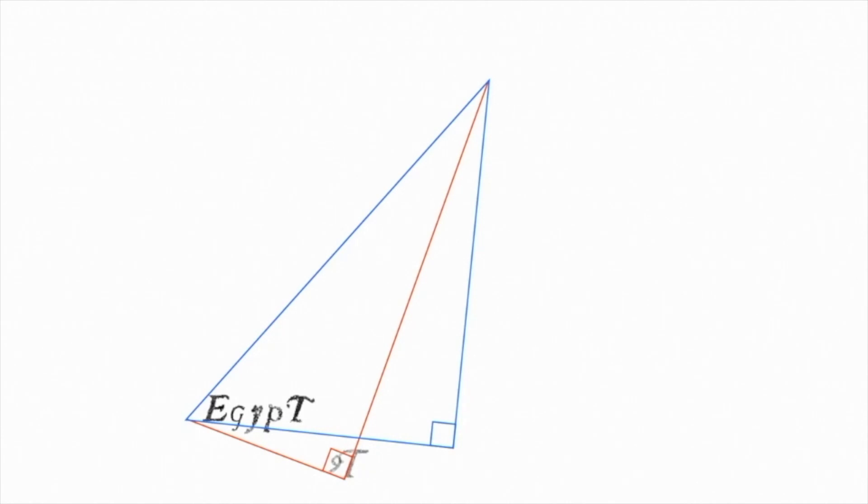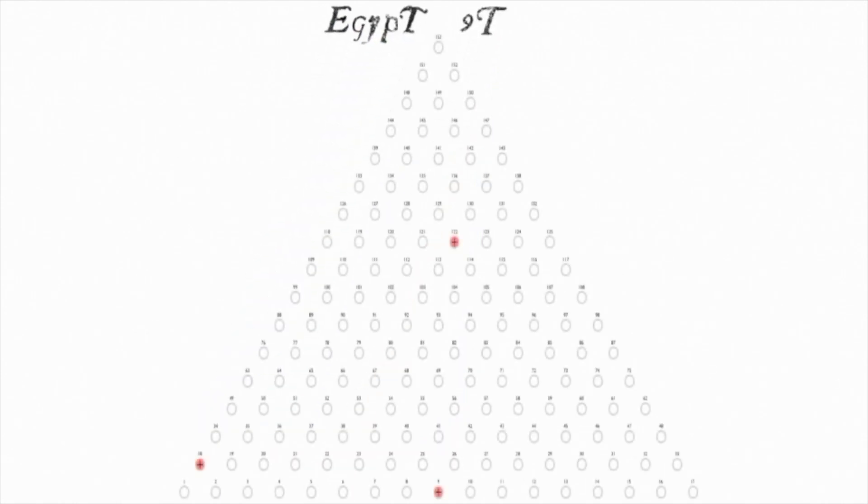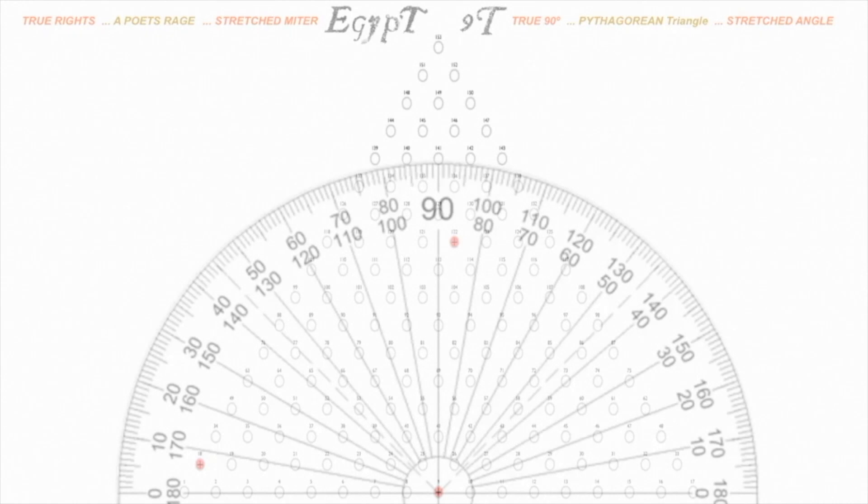Suddenly, it was crystal clear. This was a key to deciphering the entire thing. True rights, true 90 degrees, a poet's rage, Pythagoras, of course we all know the Pythagorean theorem, stretched mitre, stretched angle. The 9 dot T was clearly referring to the 9 dot sonnet, so I knew I was looking for a 90 degrees emanating from the middle of the 17 base, and obviously a straight vertical takes you to the apex and a pure 90 degree angle, but it doesn't accommodate the other two numbers.